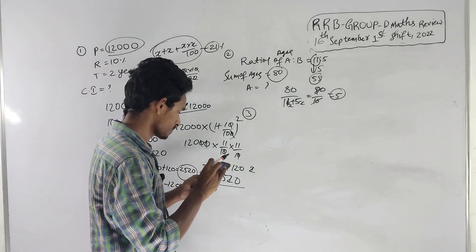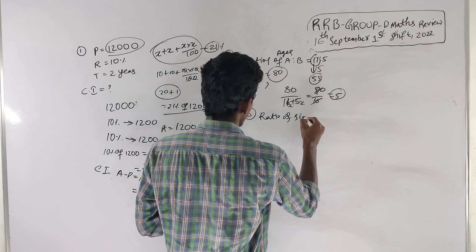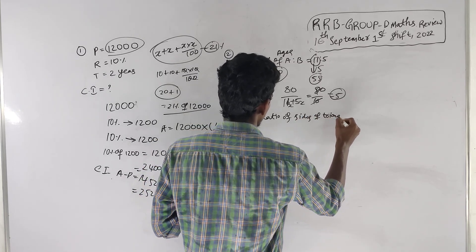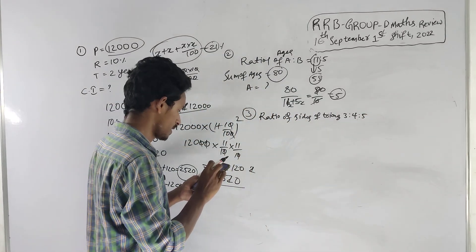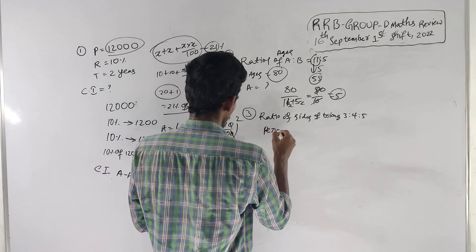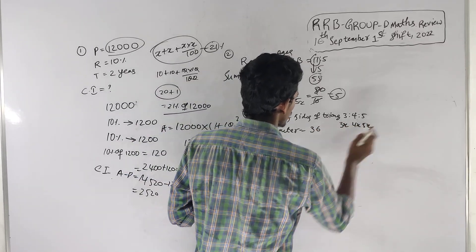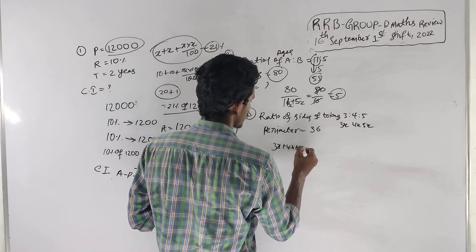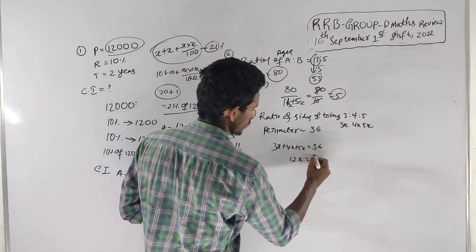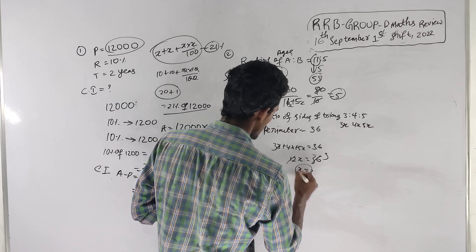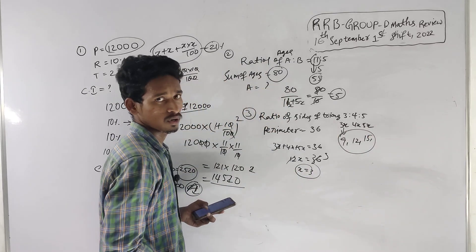Next: the ratio of sides of a triangle is 3 is to 4 is to 5. This is a right-angle triangle. The perimeter is 36. So 3x plus 4x plus 5x equals 36, which gives 12x equals 36, so x equals 3. The sides are 9, 12, and 15.